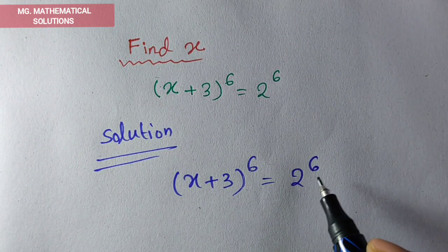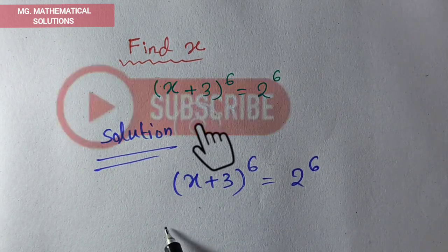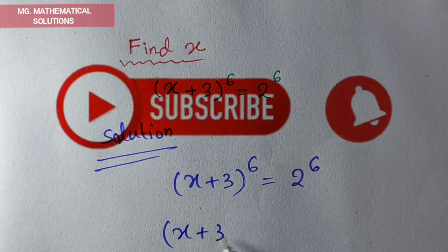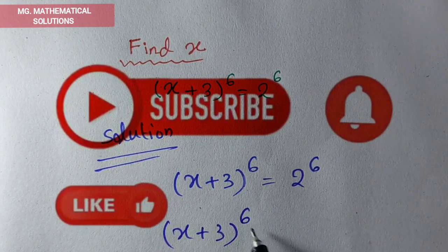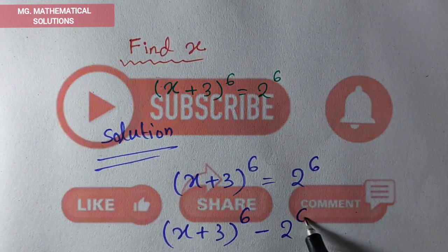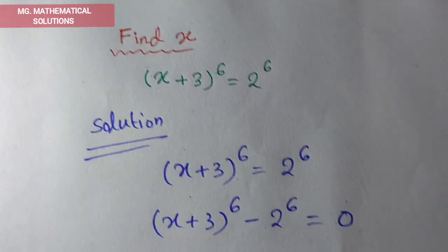Now we write this term on the left side. So (x + 3)^6 minus 2^6 equals 0.